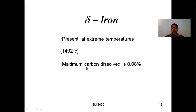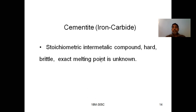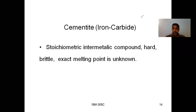Next, delta iron: it presents at extreme temperatures up to 1490°C. The maximum carbon that can be dissolved is 0.08%. Cementite, also called iron carbide (Fe₃C), is the stoichiometric intermetallic compound — it is hard and brittle, and the exact melting point of cementite is not precisely known.